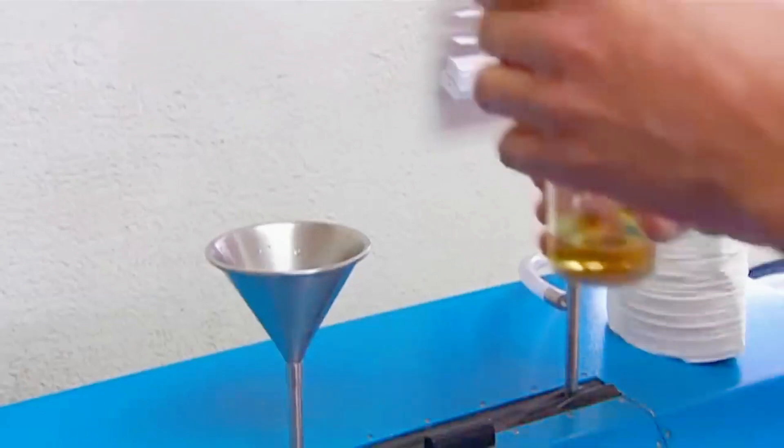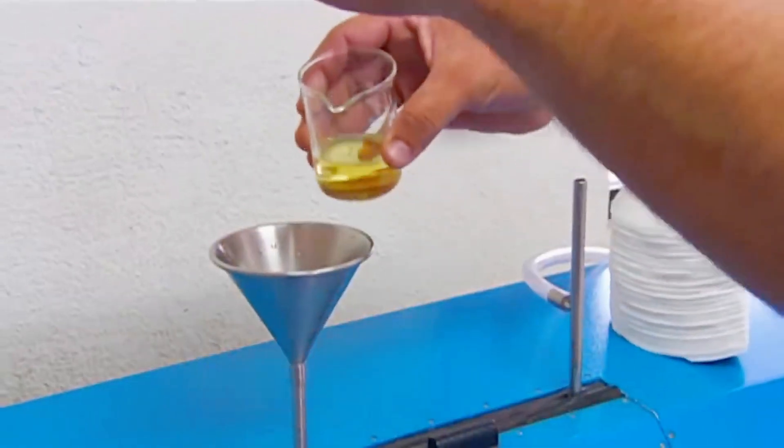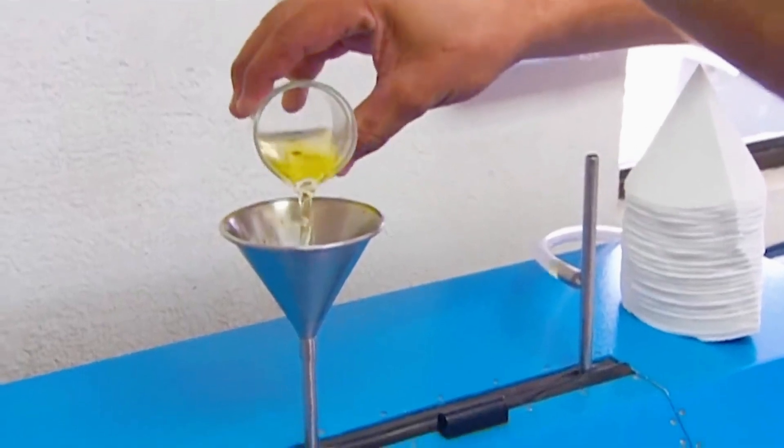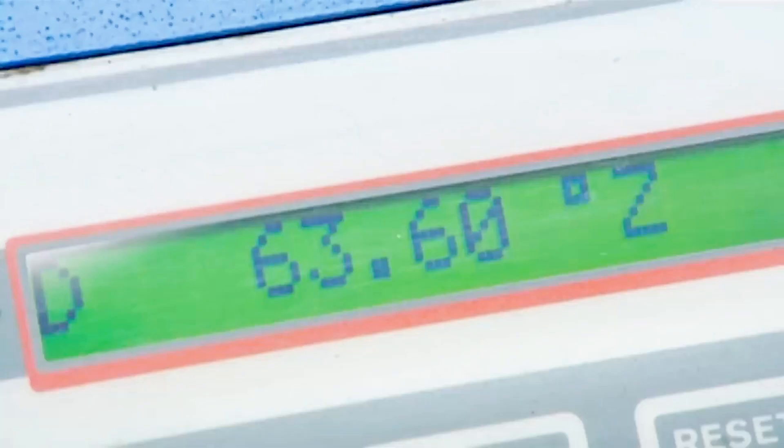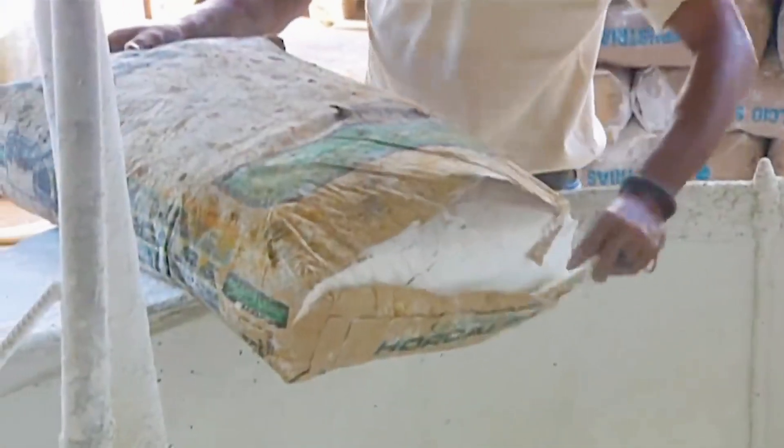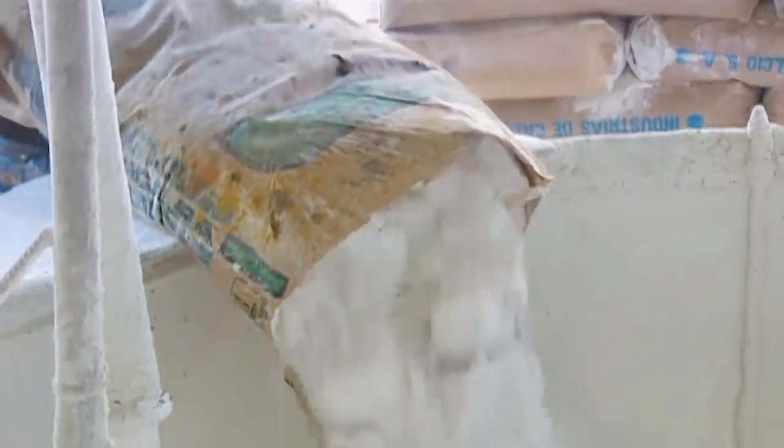In clarification, lime and sometimes phosphoric acid are added to the syrup. These agents bond with the impurities, causing them to clump together and settle at the bottom of the container. This process helps create a much clearer liquid, but we're still not quite at the final product.